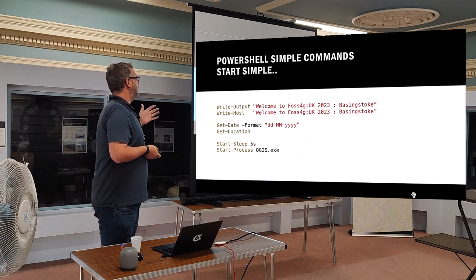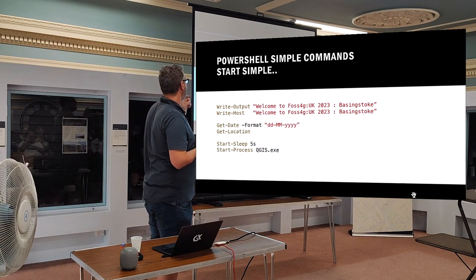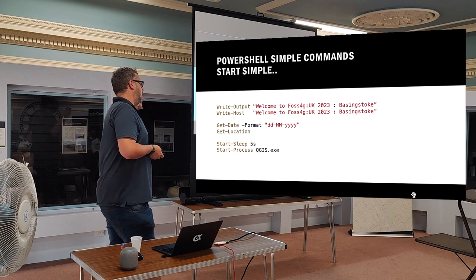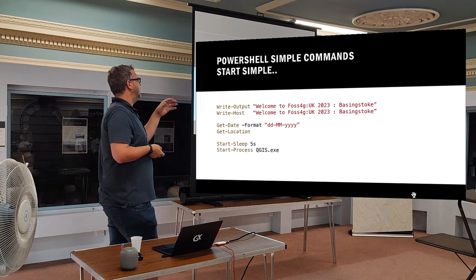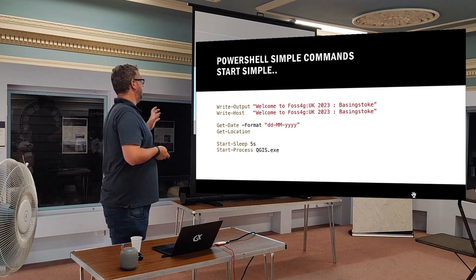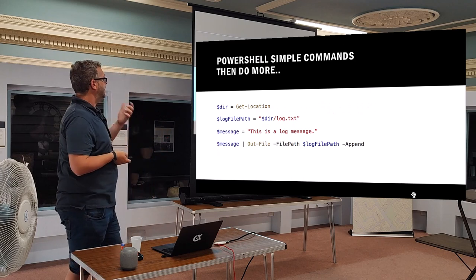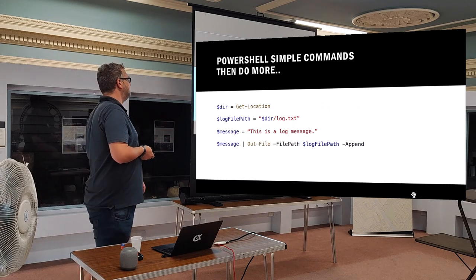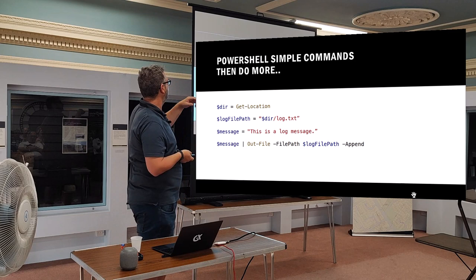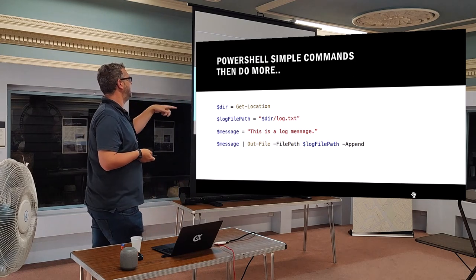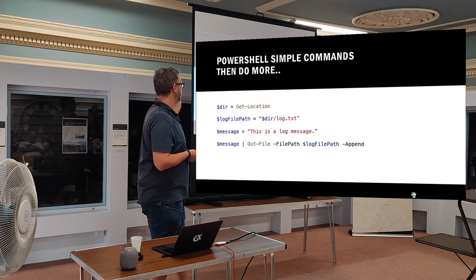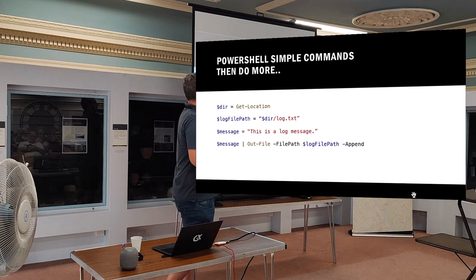In terms of its actual structure, it's written in this verb-noun format. We've got things like write, get, start, clear, and then we've got verbs to do things, and nouns to do things to. Really simple. But we can start expanding on those simple things. Here I've declared a variable of the local directory, daisy-chained that to create a log file, written a message, and in my last line appended that message to my log file — easy as.